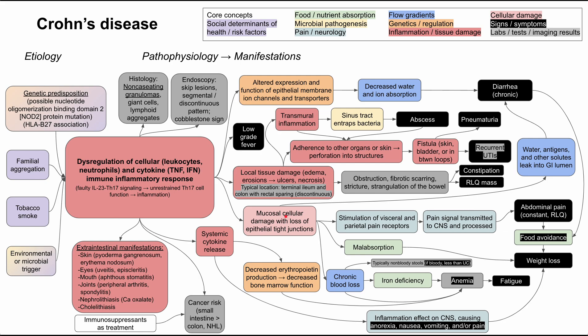This is a mechanism of disease map for Crohn's disease. I'll be talking about the etiology, pathophysiology, and how that leads into the manifestations of the disease. These flowcharts are color-coded according to the core concepts listed in the legend. This is the entire map, so take a screenshot if you like, and I'll be going through all of it one by one.